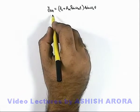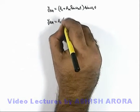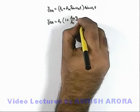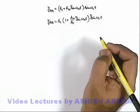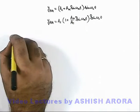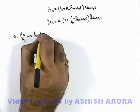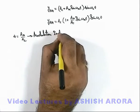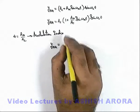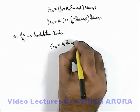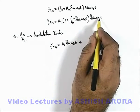Continuing our analysis, we can analyze this wave equation further. If we take Ac common, this will be Ac × (1 + (Am/Ac)·sin(ωmt)) × sin(ωct). Here Am/Ac we can consider as a constant μ, where μ = Am/Ac is called the modulation index. Substituting μ, yam can be written as: Ac·sin(ωct) + μ·Ac·sin(ωmt)·sin(ωct).